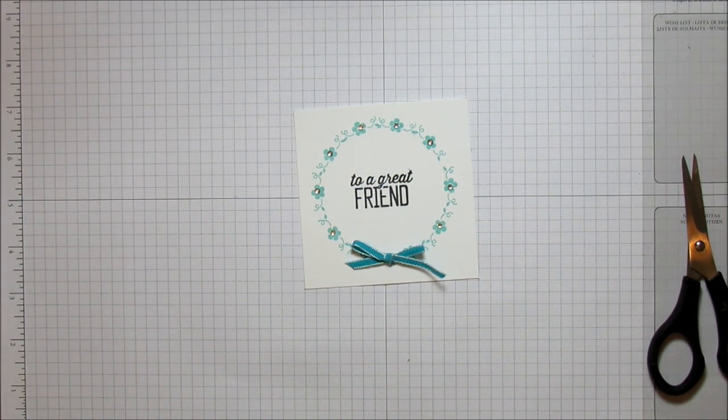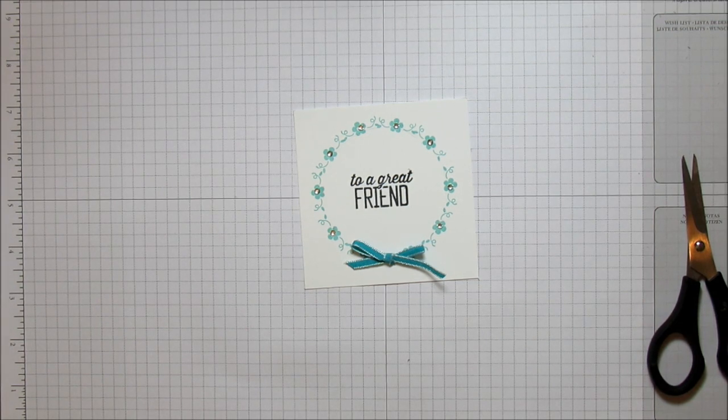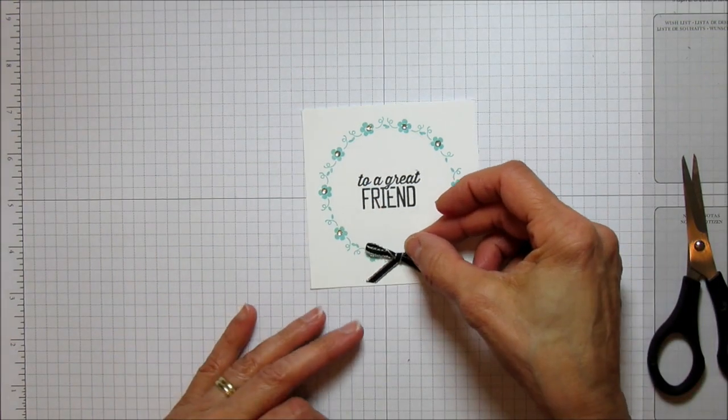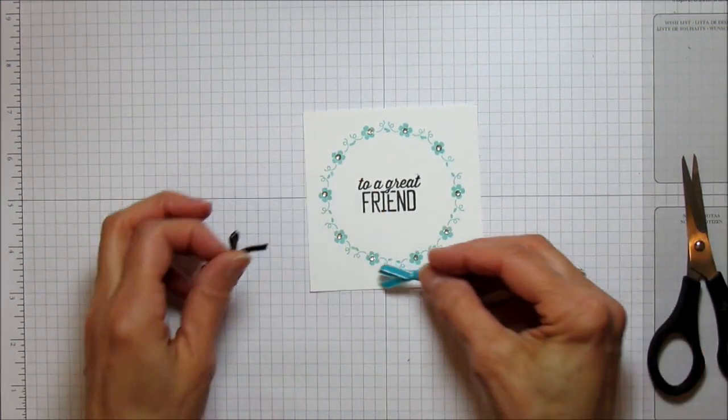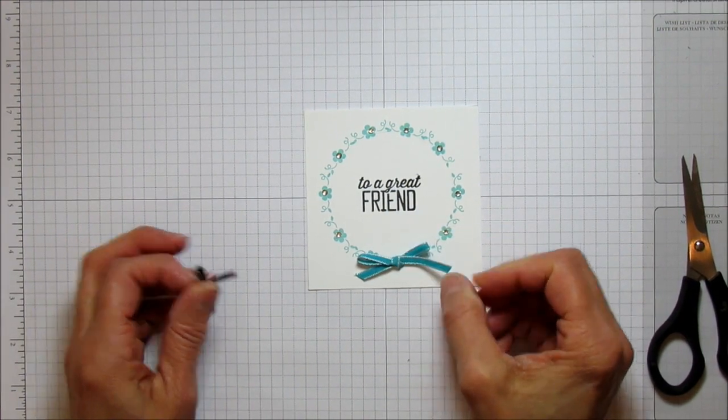I'm using the Bermuda Bay—that's a little tongue twister—and it's the taffeta ribbon, the 1/8 inch. This is the black one, and I still kind of like the black better, but I think I'm going to go ahead and use the Bermuda Bay this time on it.